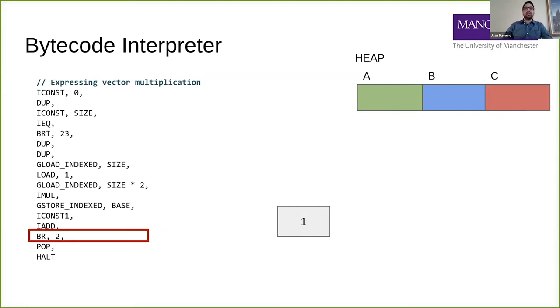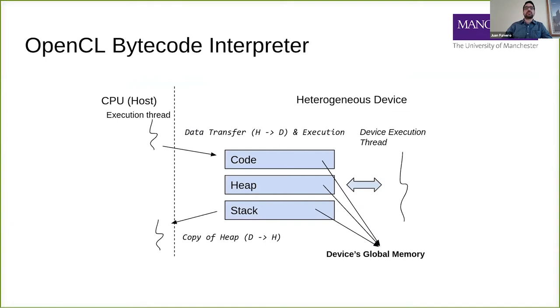Let me show you now how we did this in OpenCL. We generate OpenCL code - we actually wrote it in OpenCL. We have one thread on the host side that is going to configure the whole execution and send the data to the device, to the GPU or FPGA. The code is copied to global memory. We have a heap allocated on global memory of the device. The stack in our first version was on global memory. On the device, we launched a single thread. That was our first initial experiment.